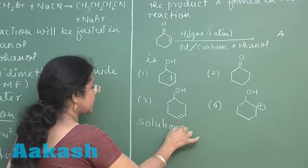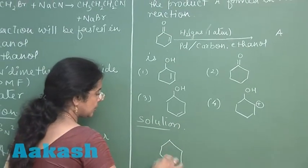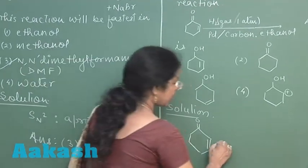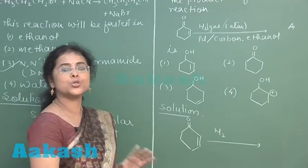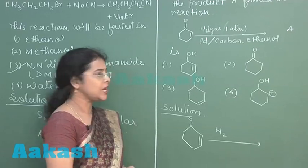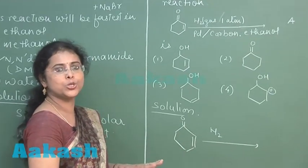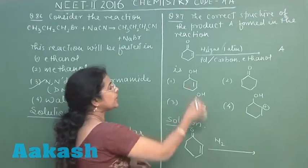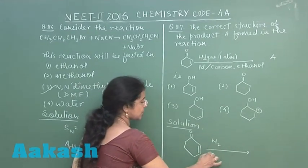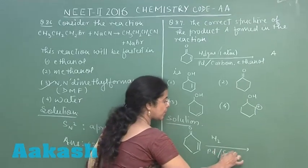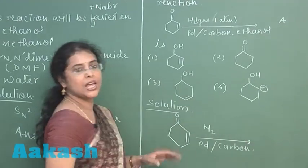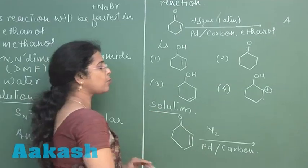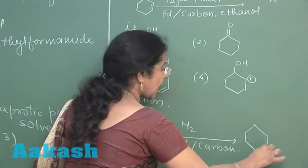Let us see the reaction taking place here. This compound is having carbon-carbon double bond as well as carbon-oxygen double bond. Now see if the reactant is hydrogen gas only in presence of catalyst, then both the double bonds will be reduced and product will be saturated cyclo alcohol. But here in this question hydrogen gas is taken and catalyst is mixed with carbon.